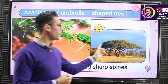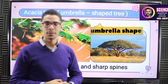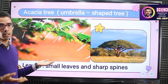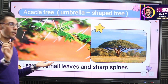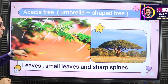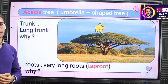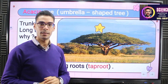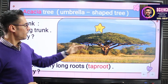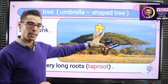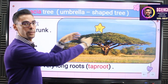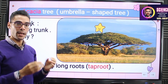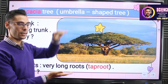Also, as you can see here, the acacia tree takes an umbrella shape — it is an umbrella-shaped tree. The leaves are small with sharp spines. The next part is really important: do you see the stem? It makes the acacia tree the tallest one in this place. So the acacia tree has a long stem.